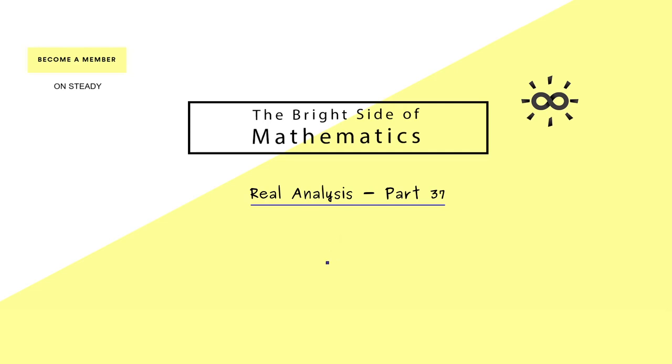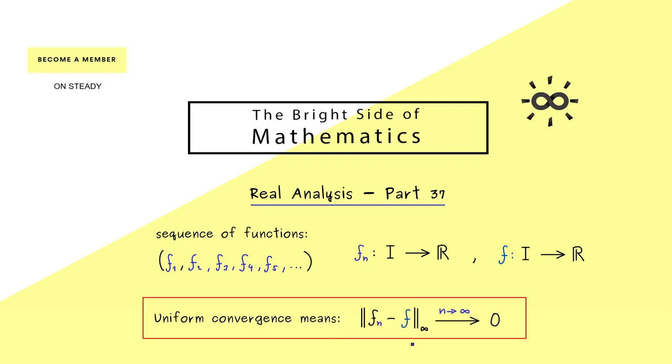Please recall what we already know about uniform convergence. It applies to a sequence of functions fn with the common domain I. Then we can have a limit function we simply call f. Now the short formulation for the uniform convergence is given by the supremum norm. So the supremum norm of fn minus f goes to 0 when n goes to infinity. Indeed this is a very strong property a sequence of functions can have.